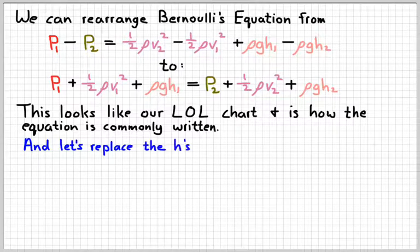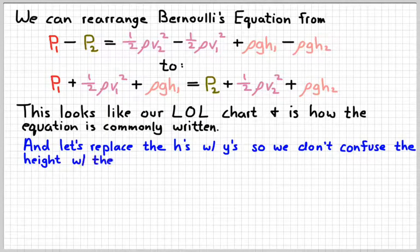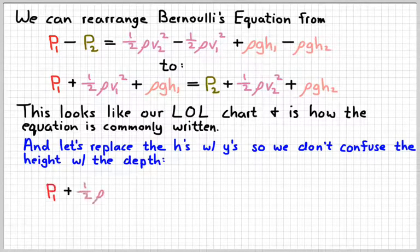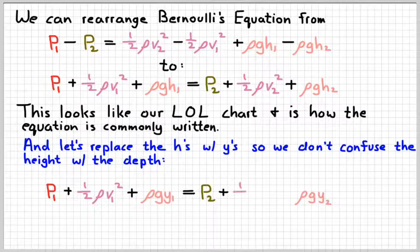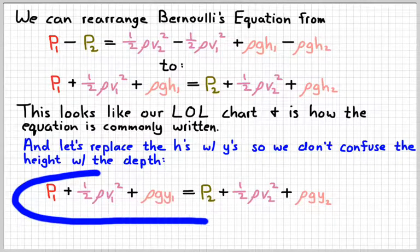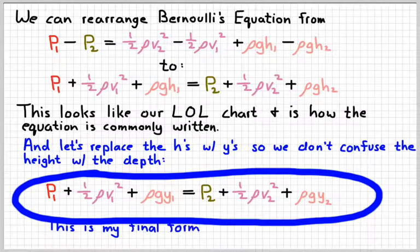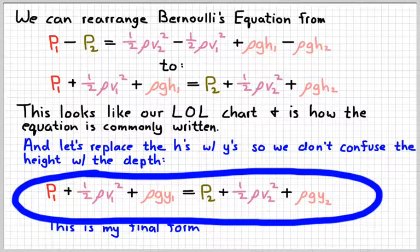One more thing, just to keep things from getting too confused. We're going to replace the h's for height with a y. That way we don't get h for height confused with h for depth. So the rho gy part in that equation isn't a static pressure, it's a gravitational potential energy. And so typically this is how we would write it, and that's how it appears on our formula chart. In other words, this is my final form.